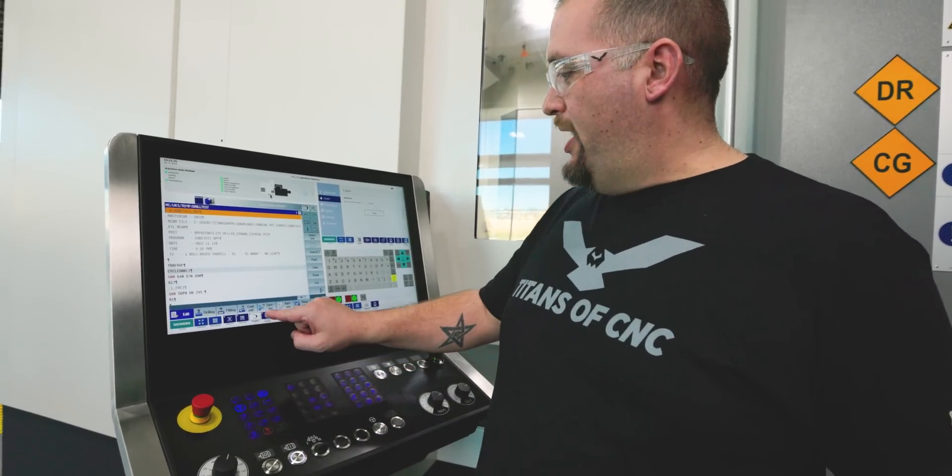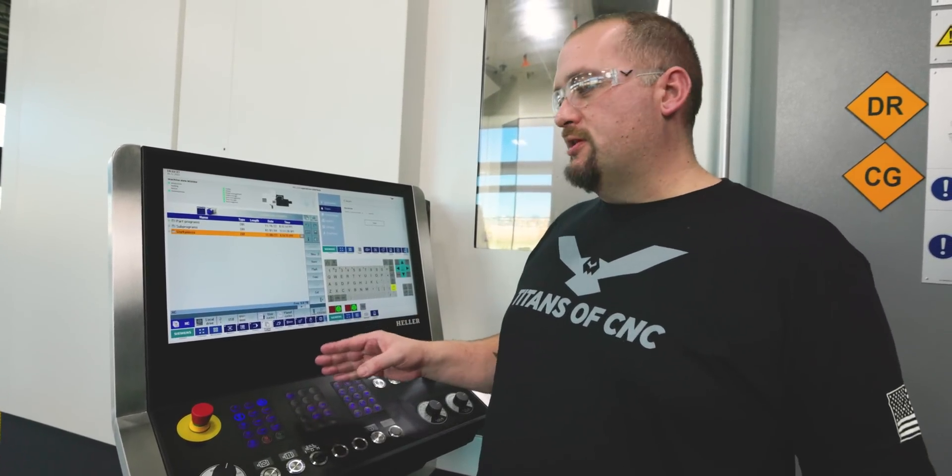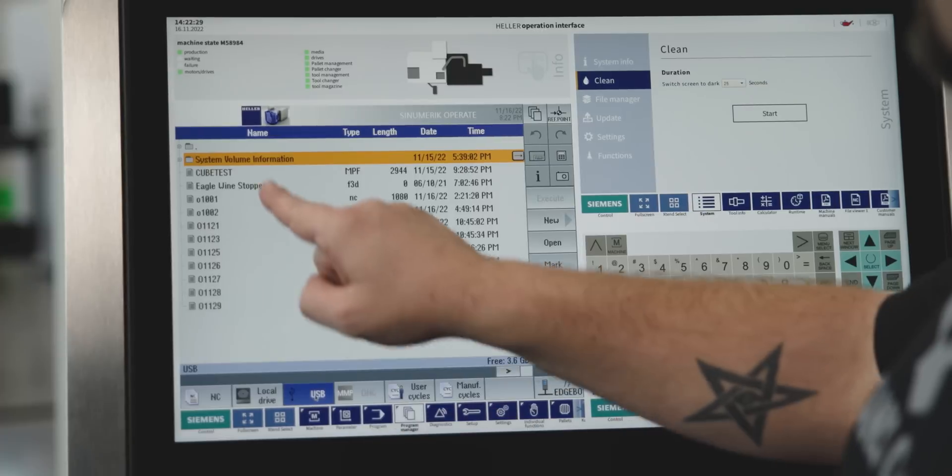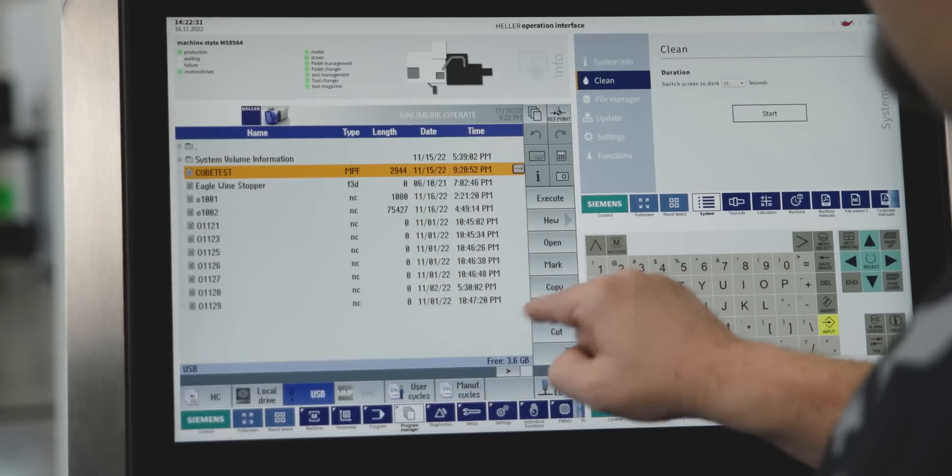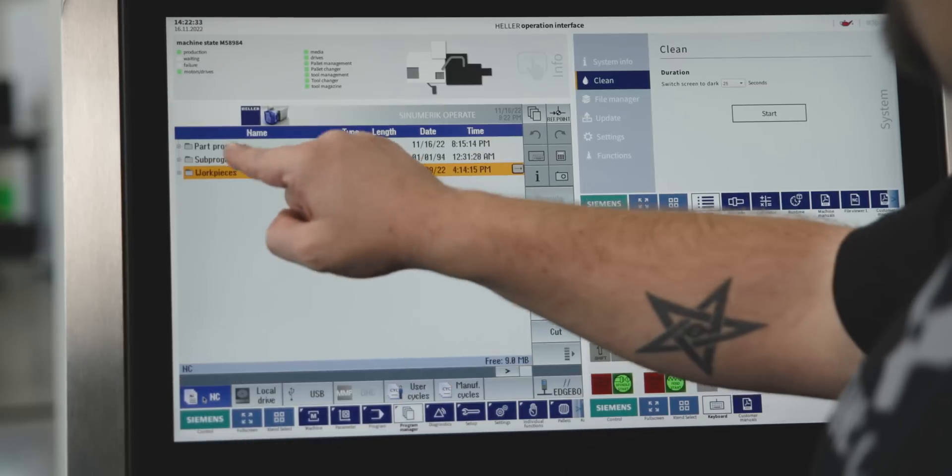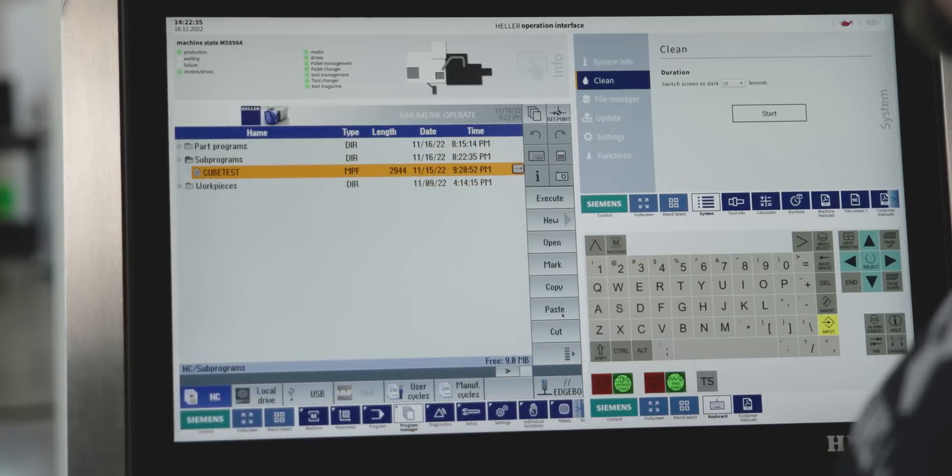All right, so a lot of you may appreciate the program manager. If I want to load a program into this machine, all I got to do is go to my USB drive, pick my program, copy it, go back to the NC drive, pick a folder, paste it. Boom, done.